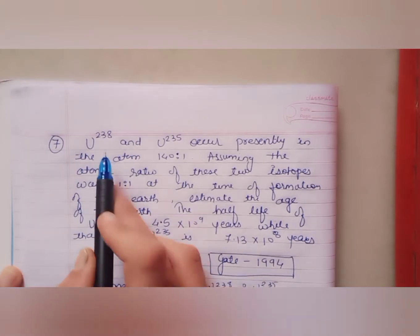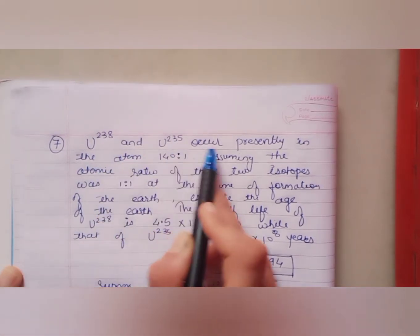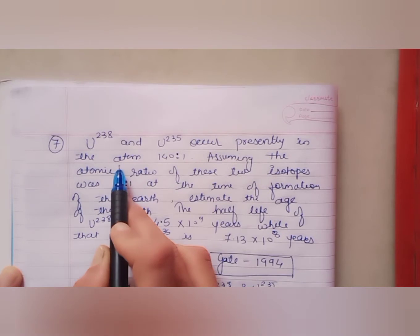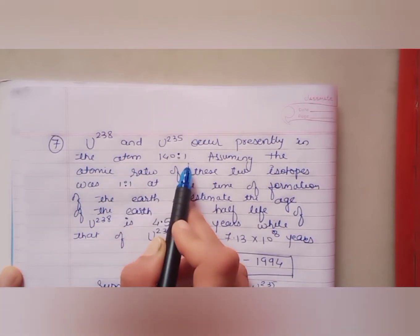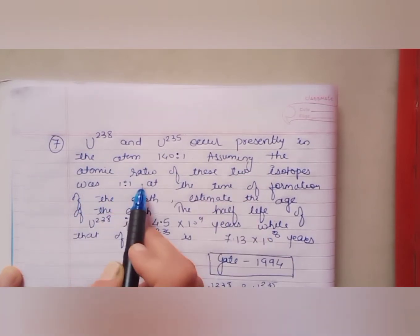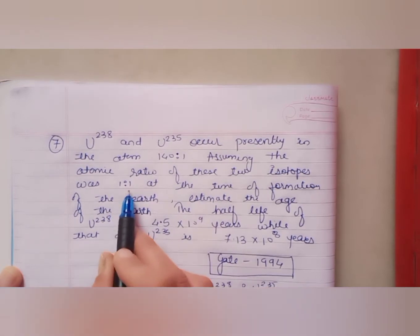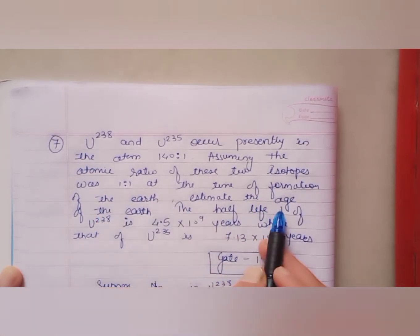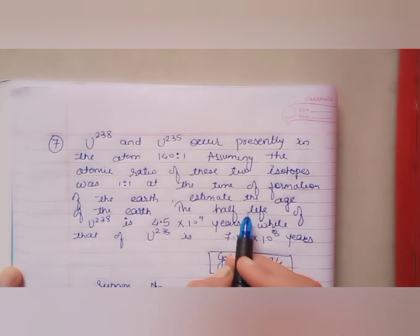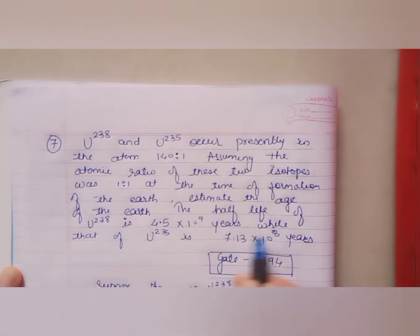Let's see the question. Uranium-238 and Uranium-235 occur presently in the ratio 140 to 1. Assuming the atomic ratio of these two isotopes was 1 to 1 at the time of formation of the earth, estimate the age of the earth. The half-life of Uranium-238 and Uranium-235 is given. This question was asked in GATE 1994.